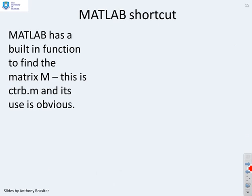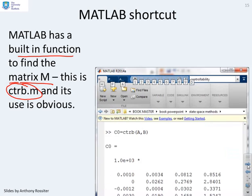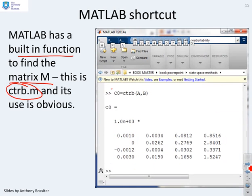Some asides. MATLAB does have some shortcuts which you might want to use. So it's got a built-in function to find this matrix. And this is called ctrb.m, and you can see that's short for controllability. So here I've illustrated how you use that. You just write ctrb(A,B), and it will give you this matrix M_c, this controllability matrix.